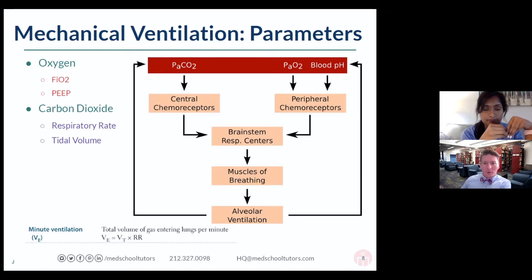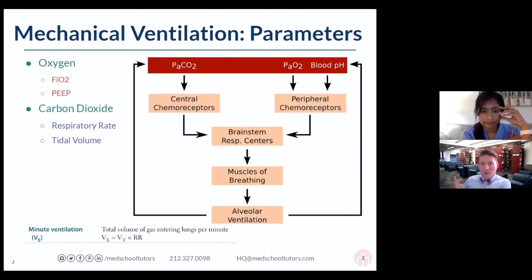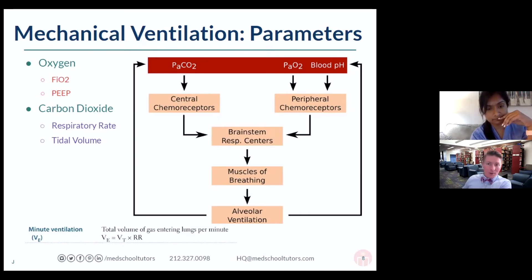CO2 and O2 are the two things we're paying attention to when we intubate a patient. When they give you a question about mechanical ventilation and ask what do you want to do — how do you fix this patient who's being mechanically ventilated — in the vast majority of cases, they're asking: should I be fixing the oxygen? Should I be fixing the carbon dioxide? And how would I fix CO2 or oxygen in this patient? If the CO2 value is not 40, you probably want to fix it. If the oxygen value is below 70, that's probably where you need to start making an intervention.